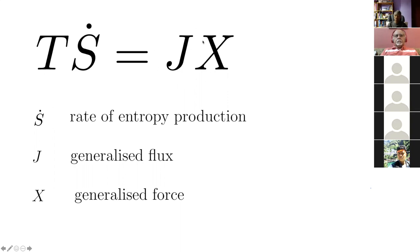In the case of a diffusion flux, the driving force would not be a concentration gradient but a chemical potential gradient. So Ṡ is the rate of entropy production, with generalized flux and generalized force.